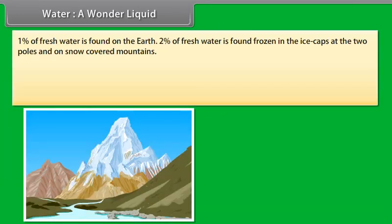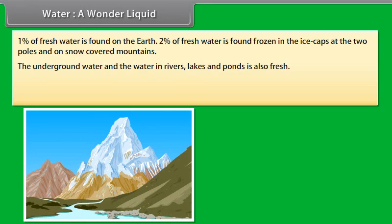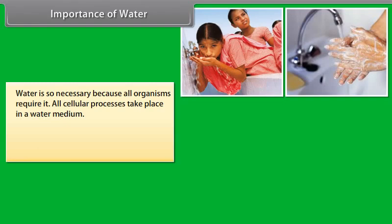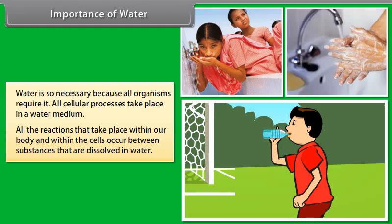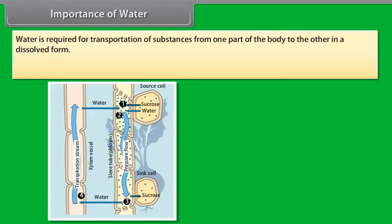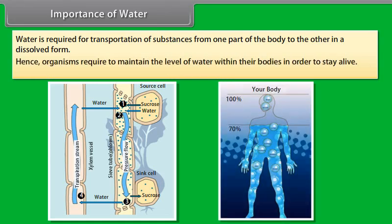Importance of water. Water is so necessary because all organisms require it. All cellular processes take place in a water medium. All the reactions that take place within our body and within the cells occur between substances that are dissolved in water. Water is required for transportation of substances from one part of the body to the other in a dissolved form. Hence, organisms require to maintain the level of water within their bodies in order to stay alive. Terrestrial life forms require fresh water for this because their bodies cannot tolerate or get rid of high amounts of dissolved salts in saline water. Thus, water sources need to be easily accessible for animals and plants to survive on land.